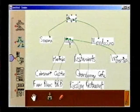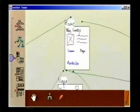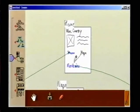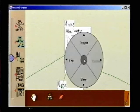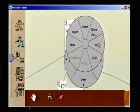Denim is a tool that supports the early stages of designing websites. It allows designers to quickly sketch their website ideas at multiple levels of detail and allows them to interact with their designs.